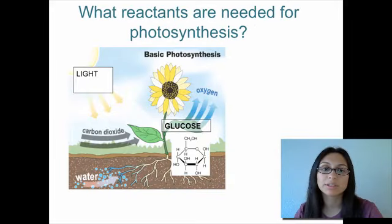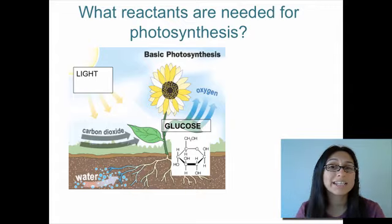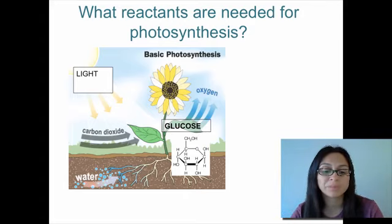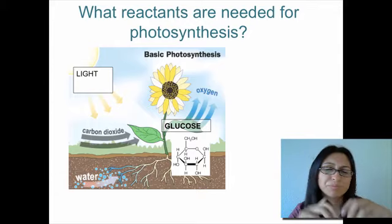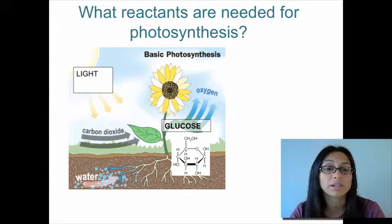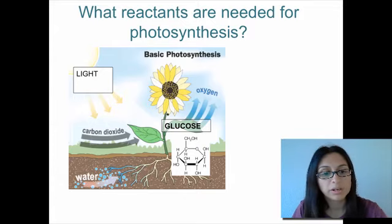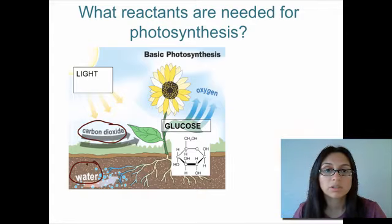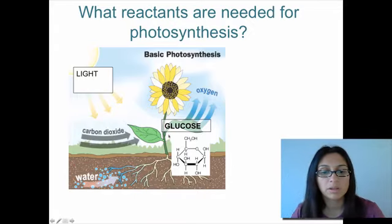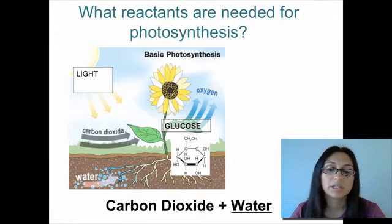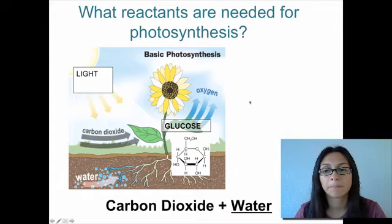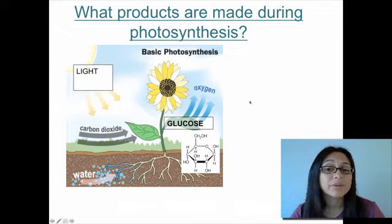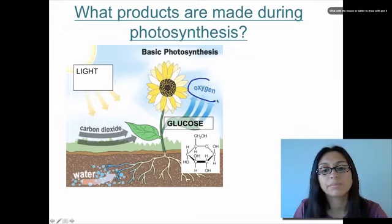Now let's get into the actual photosynthesis. Photosynthesis is a chemical reaction — we take molecules, tear them apart, and rearrange them into something new. In a chemical reaction, you have reactants, which are what you start with, and those get rearranged into the products. In photosynthesis, the reactants are carbon dioxide and water. Those two molecules are broken apart and rearranged into the final products: oxygen and glucose.